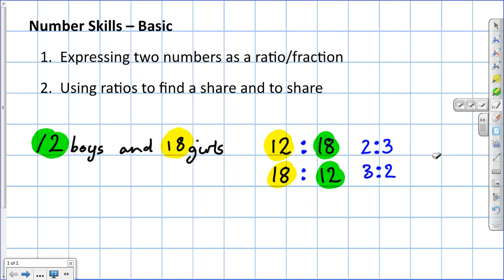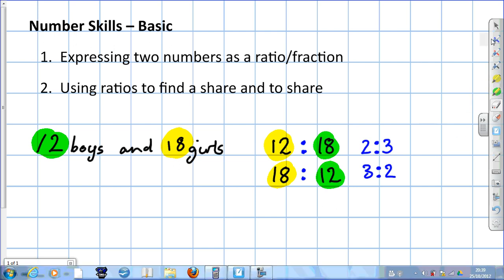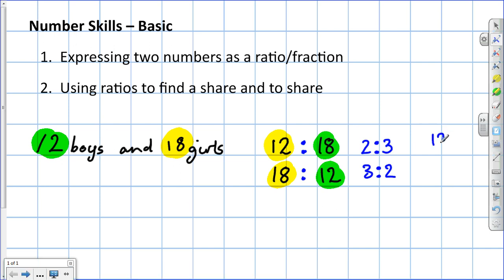Now, the link between ratio and fraction. What fraction of the class are boys? The fraction of the class that are boys, 12, that's the number of boys out of, we have to do a bit of arithmetic. The class contains boys and girls. So the answer isn't 12 over 18, it's 12 over 30.